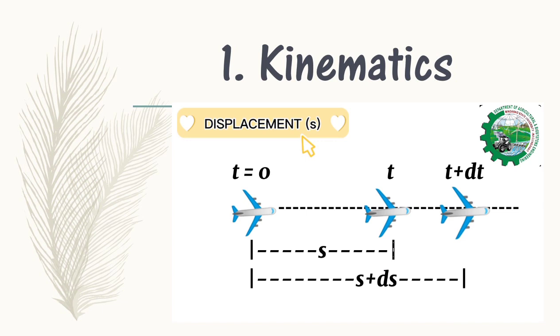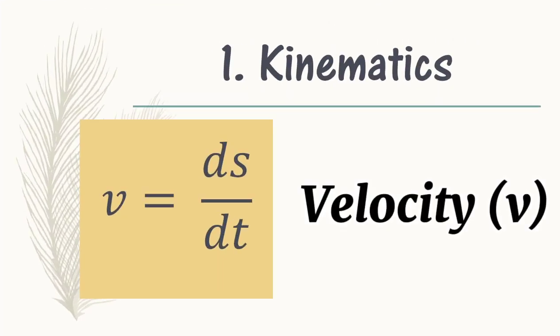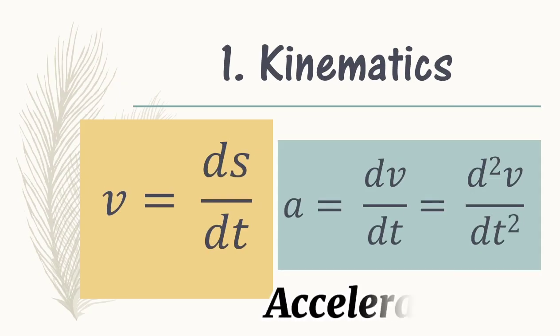We may recall Kinematics in our physics subject. Displacement with the symbol S is the change in position of the object as the time changes. We also have velocity as the time derivative of displacement. We can solve for the value of velocity when we have the equation of displacement as a function of time. We can get the derivative with respect to time. Next is acceleration as the time derivative of velocity or the second time derivative of displacement.